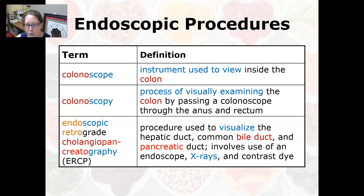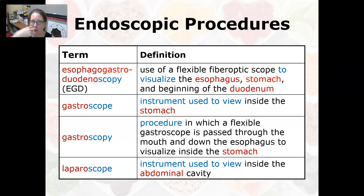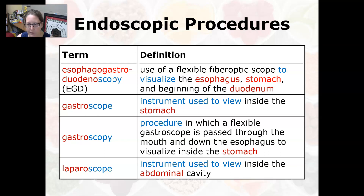Endoscopic retrograde cholangiopancreatography, or ERCP, is a procedure used to visualize the hepatic duct, the common bile duct, and the pancreatic duct; it involves the use of an endoscope, X-rays, and contrast dye. Esophagogastroduodenoscopy, or EGD, uses a flexible fiber optic scope to visualize the esophagus, stomach, and the beginning of the duodenum — useful to see esophageal varices, stomach ulcers, or duodenal ulcers.